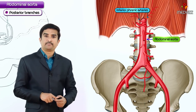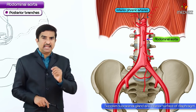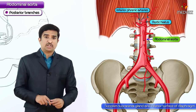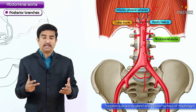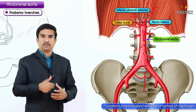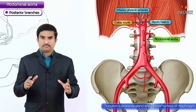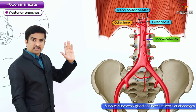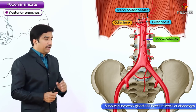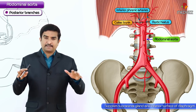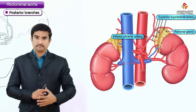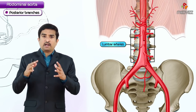The inferior phrenic arteries arise immediately inferior to the aortic hiatus of the diaphragm, either directly from the abdominal aorta or from the base of the celiac trunk, but most commonly directly from the abdominal aorta immediately inferior to the aortic hiatus. They pass upwards to provide arterial supply to the suprarenal gland and continue onto the inferior surface of the diaphragm, also giving off the superior suprarenal artery.